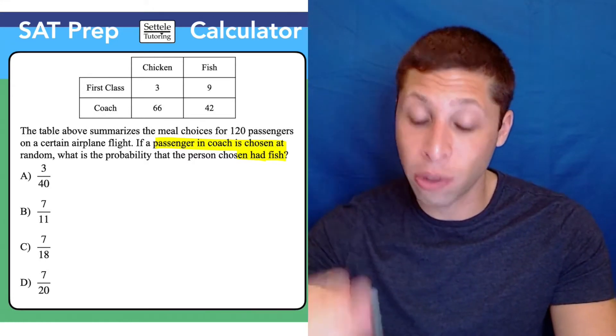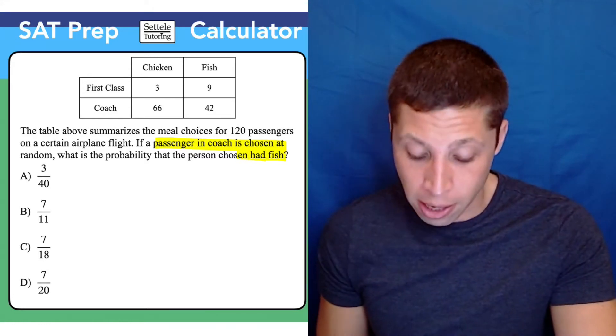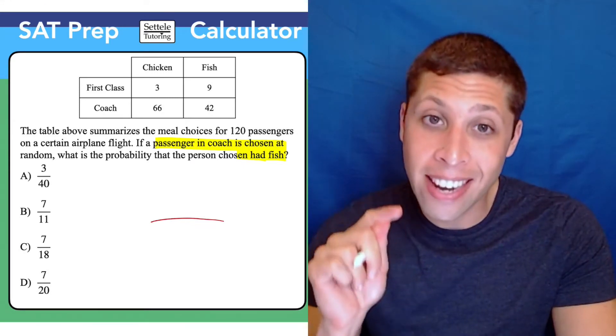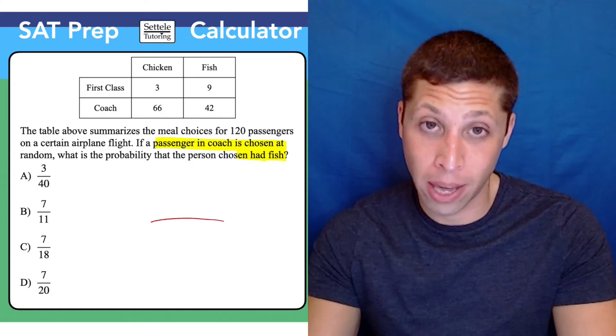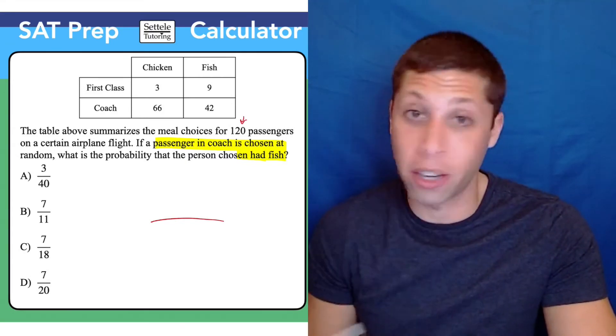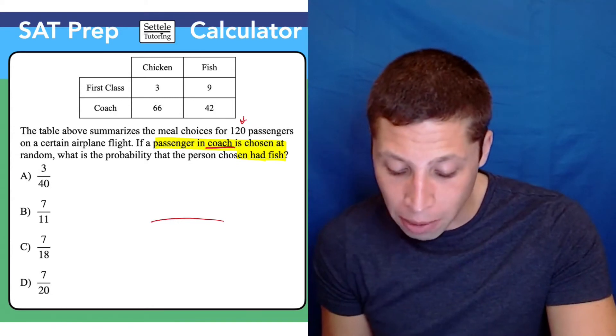We're going to represent this with a fraction. So the key part always is the denominator of the fraction, what's on the bottom. We're not choosing out of all 120 passengers here, no. We only care about the people in coach.